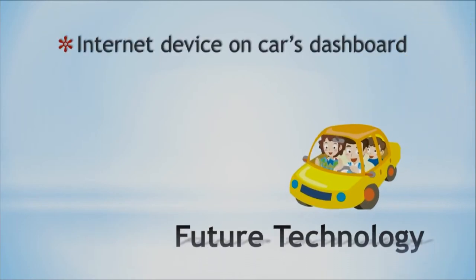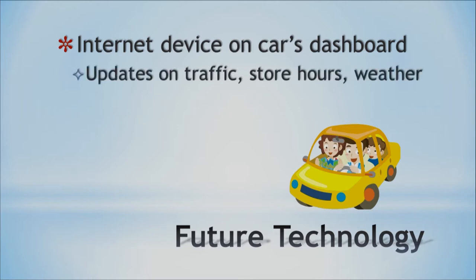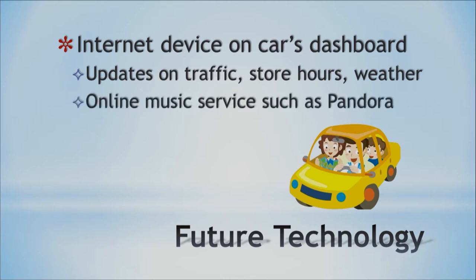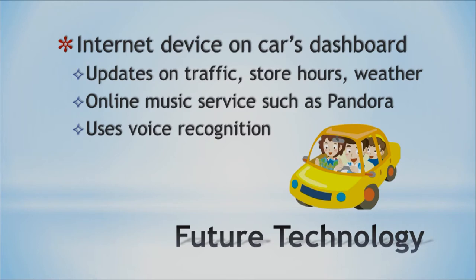Now let's talk about the future. One thing is the internet device on a car's dashboard. My brother has one — it's pretty cool. You can dial in the address you're going to and it gets you there. It also gives updates on traffic, store hours, weather, online music services like Pandora, and voice recognition that talks back to you — turn left, turn right. Some of these devices are already out there to some extent.